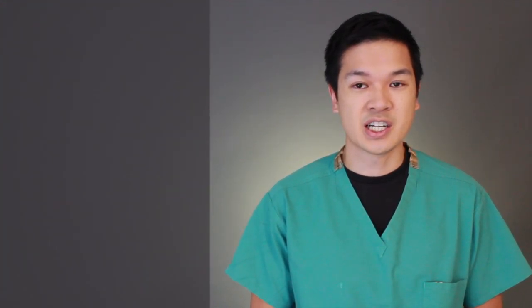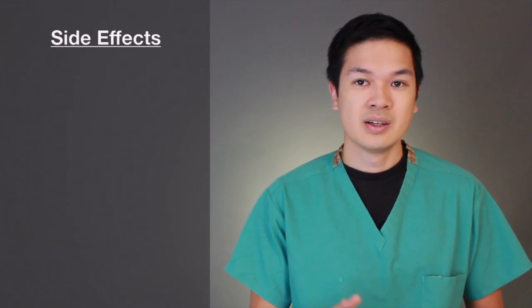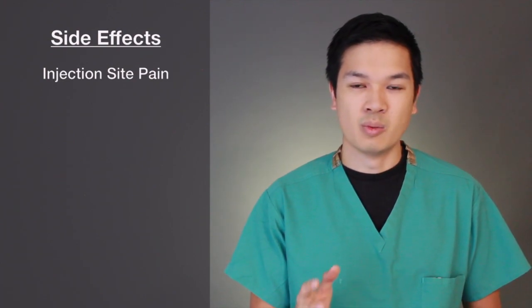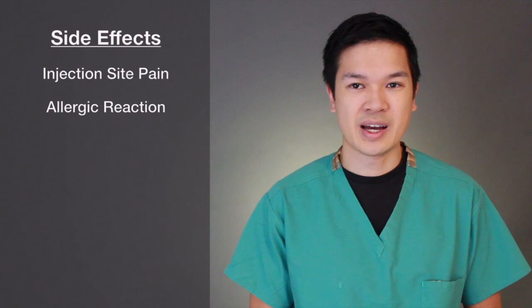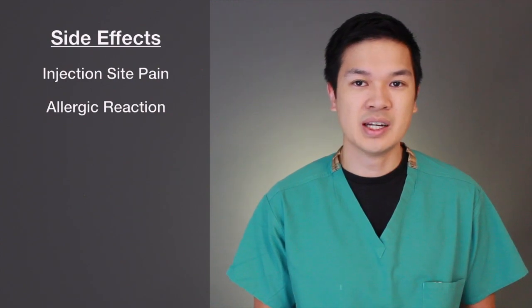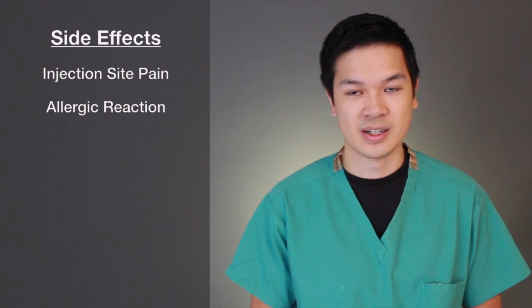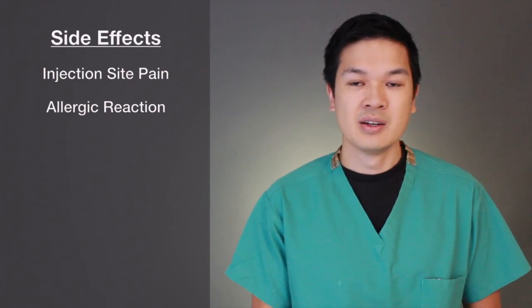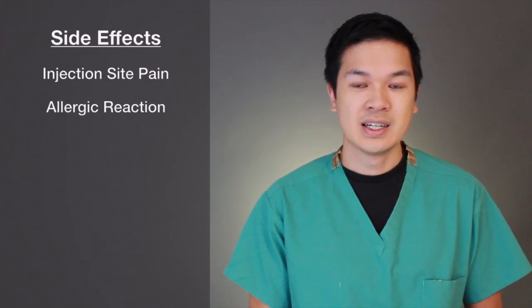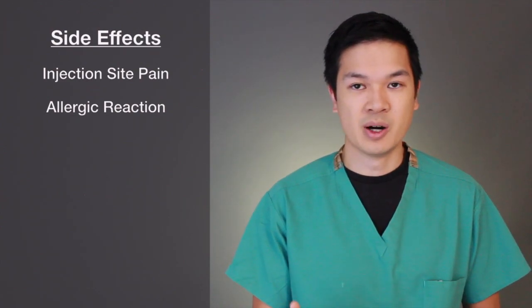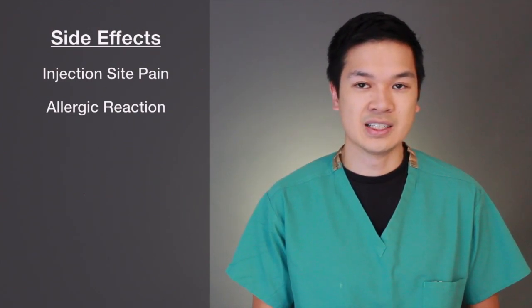Propofol has many side effects. It has the most significant injection site pain, and this can be reduced by local anesthetics or injecting into a large vein. One in 20,000 patients will have an allergic reaction to Propofol. You may consider avoiding Propofol in patients with soybean, peanut, or egg allergies, especially if the patient had an anaphylactic reaction to any of these. It should be noted that many patients who have allergies to egg whites don't necessarily have allergic reactions to Propofol, because the primary component, egg phosphatide, is found in egg yolk.